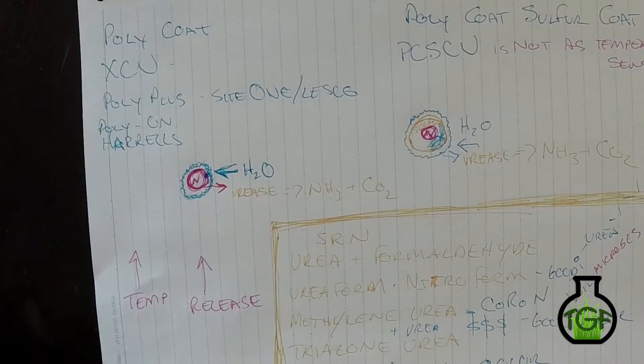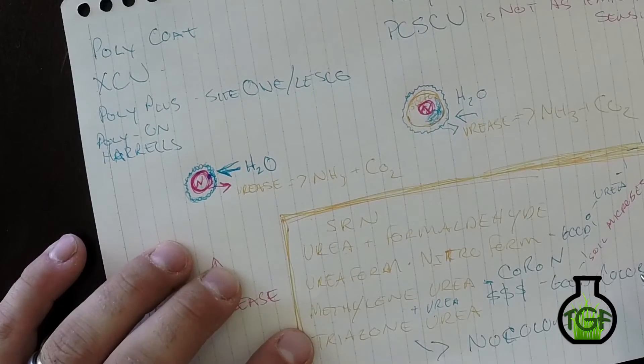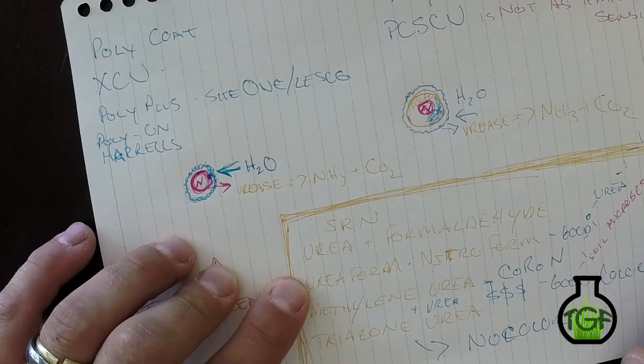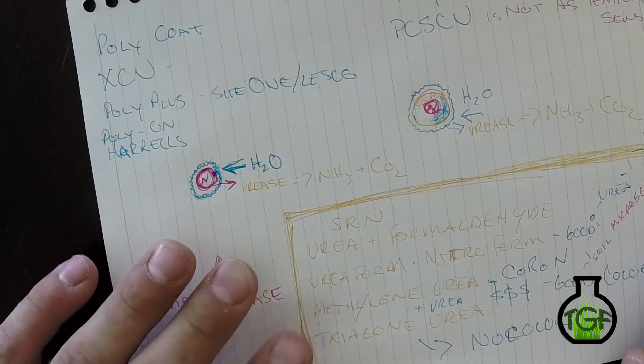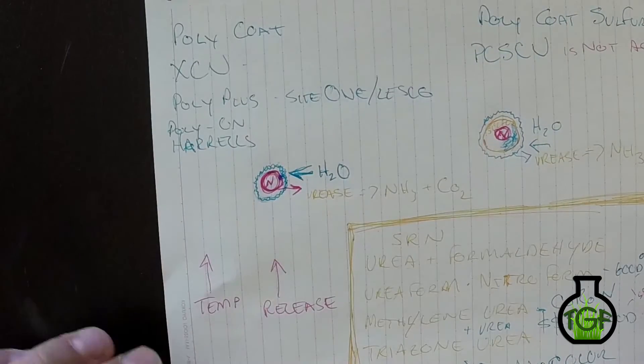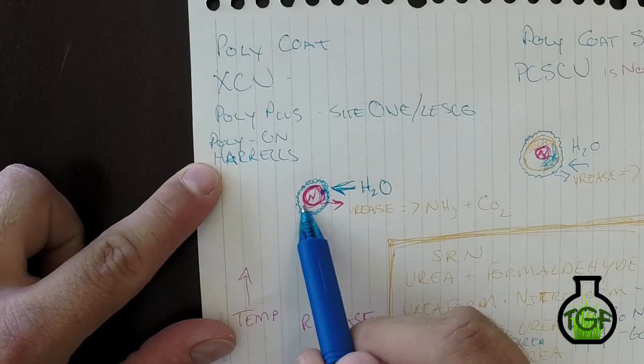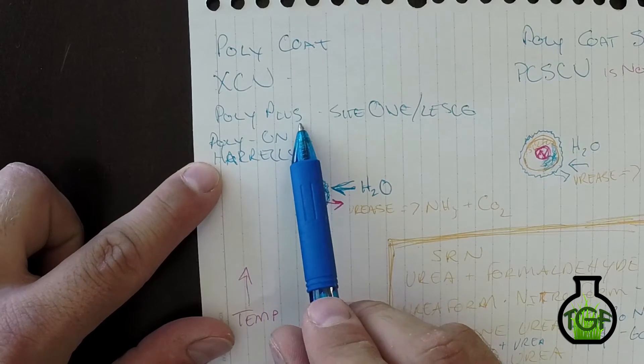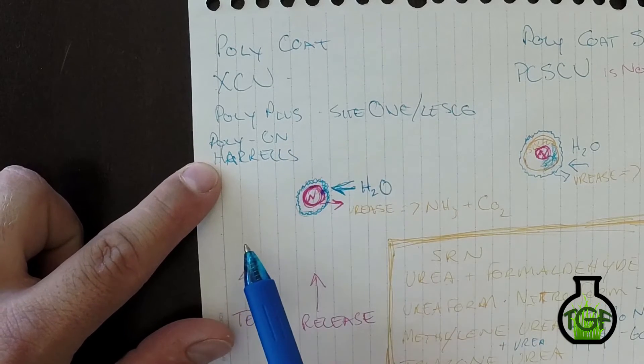With these you're probably looking at 10 weeks, 12 weeks, 16 weeks, unless you're going with the Nitro form—that could be 16 weeks or even longer. With these poly coats, depending on how thick they put this polymer coating on, these can go from four weeks, six weeks, eight weeks. I want to say they have a Duration 45, which would be 45 days—that's a pretty good six weeks approximately.